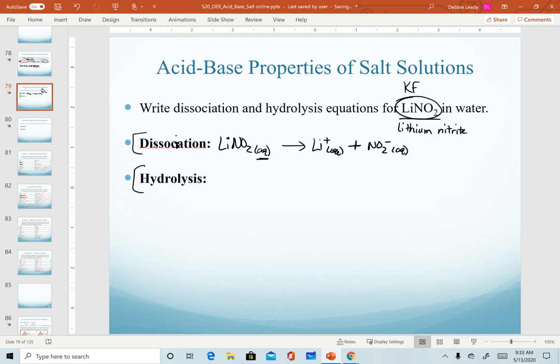To help you write the products of dissociation, realize I'm literally just breaking this apart into the ions. If you can name this salt, then you're naming the ions. This is lithium, there's my lithium ion, and nitrite, there's my nitrite ion.